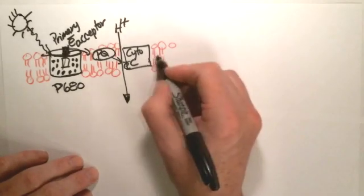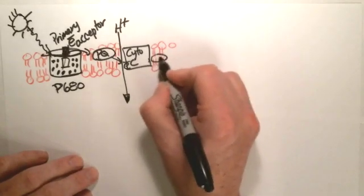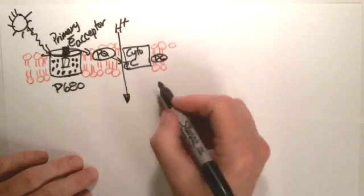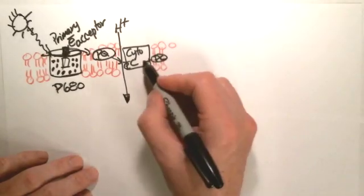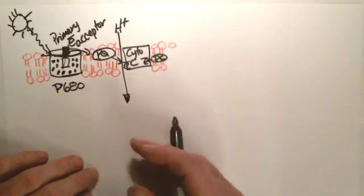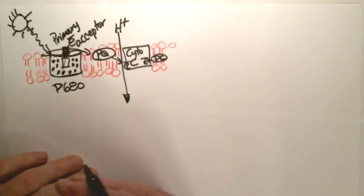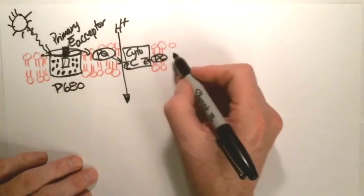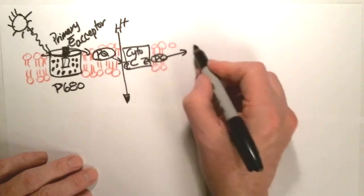Cytochrome C, on this other end, here has a product or a molecule called plastocyanin. Plastocyanin then will pick up this electron. Cytochrome C becomes oxidized. Plastoquinone becomes reduced.